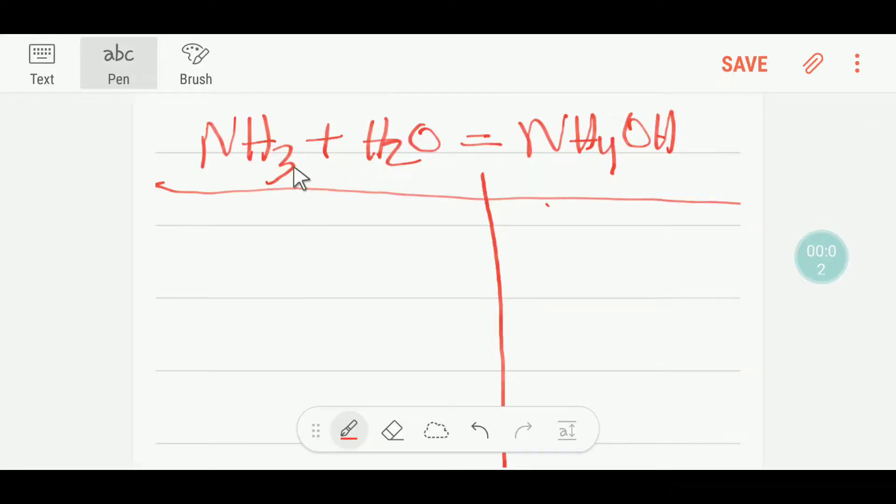Hello everyone, today we are going to balance this reaction. This is ammonia, this is water, and ammonia reacts with water and we get ammonium hydroxide. To balance this reaction, I have to count each atom from both sides.